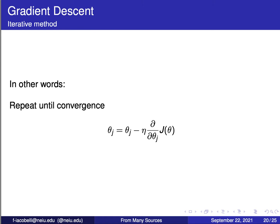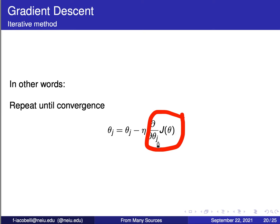To do this, we repeat until convergence: for each theta — theta zero and theta one — update it to its previous value minus the derivative of the cost function with respect to that theta. The derivative tells us whether to add or subtract. Because the derivative value can be very large, we multiply by a small value called the learning rate — the Greek letter eta. This keeps the update small so we don't overshoot.